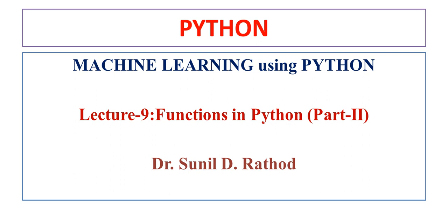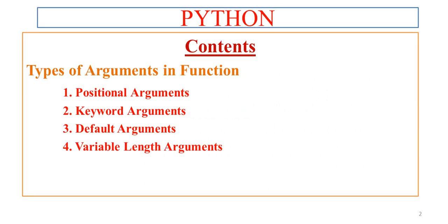Welcome to the world of Python programming under the machine learning using Python series of lectures. This is lecture 9: Functions in Python, Part 2. We will be exploring more on functions. The contents of today's lecture are types of arguments in functions — positional arguments, keyword arguments, default arguments, and variable length arguments.